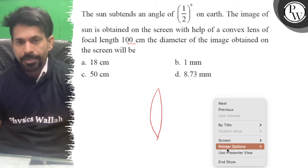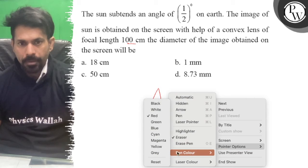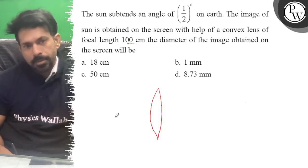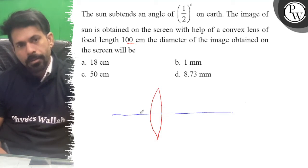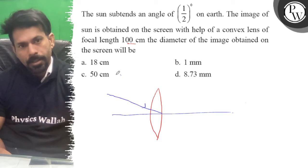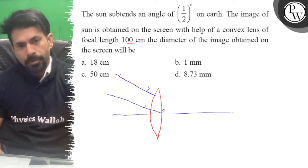The object is at infinity, so this is the principal axis and light from infinity will converge and meet at the focus.